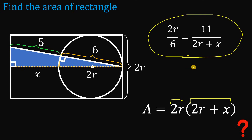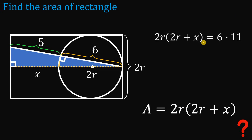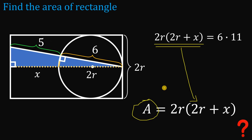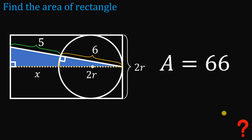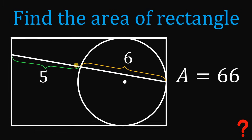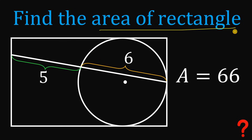Our goal is to find the area, which equals 2r multiplied by (2r plus x). Cross-multiplying the similar triangle ratios gives us: 2r multiplied by (2r plus x) equals 6 times 11. Since this expression is exactly the area of the rectangle, the area equals 6 times 11, or 66 square units. Therefore, the area of this rectangle is 66 square units, and that is the answer.